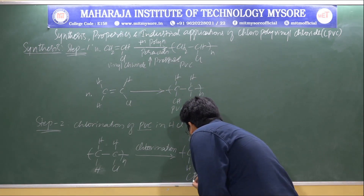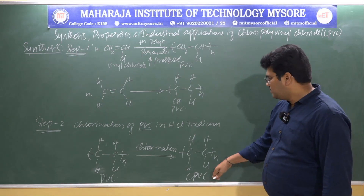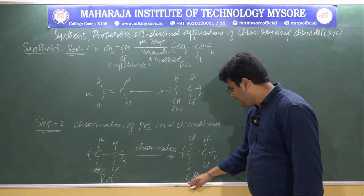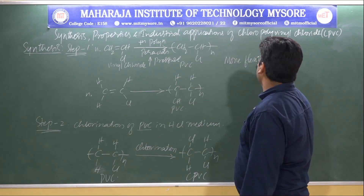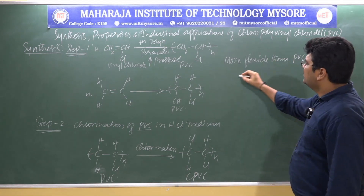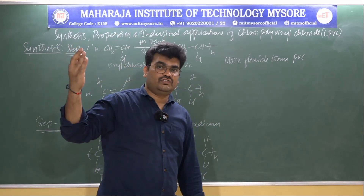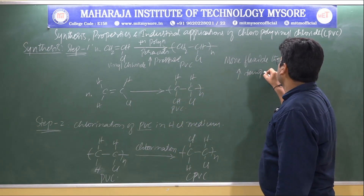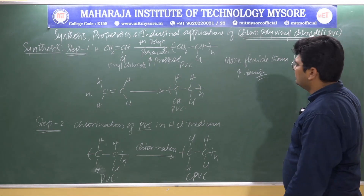In order to obtain the desired properties, polyvinyl chloride must undergo chlorination. In this way, one can prepare chloropolyvinyl chloride. CPVC is more flexible than PVC and can withstand very high temperatures, because increasing the chlorine content also increases the glass transition temperature significantly. This is the synthesis of CPVC.